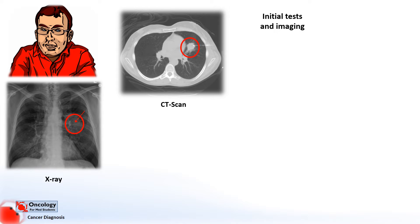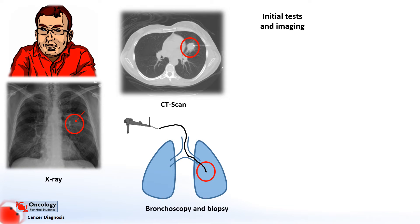The results are worrying, but even at this point we still haven't actually confirmed that he has a cancer. To do this we need to get a sample of the suspicious-looking tissue. The most common way of doing this in the case of lung masses is by using an endoscope — a camera — to look at the lungs and take a tissue sample called a biopsy of anything that looks abnormal. This procedure is called a bronchoscopy.